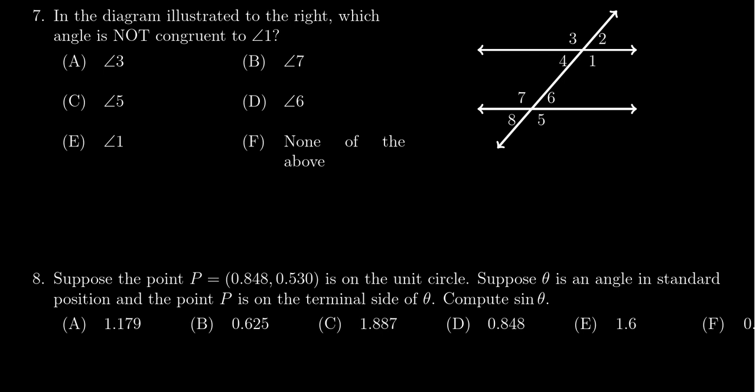We are supposed to find an angle that's not congruent to angle 1, so angle 1 is this one right here. Angle 3 is congruent to it because they're vertical angles, so we can take that off the list.